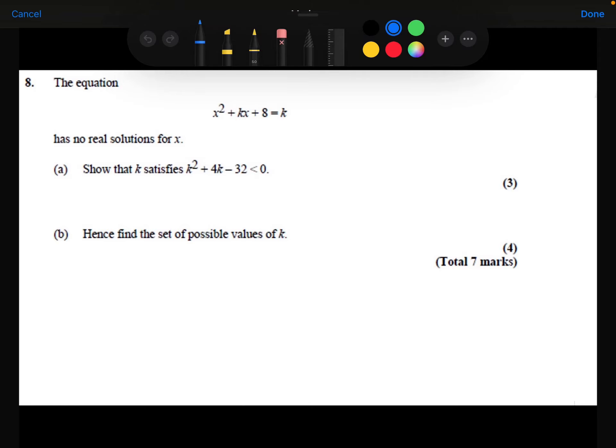The equation x squared plus kx plus 8 equals k has no real solutions for x. I need to show that k satisfies that inequality. So we've got a quadratic equation here. I'd like it to equal 0, not k. So first thing I'm going to do is to take k away from both sides so it equals 0.